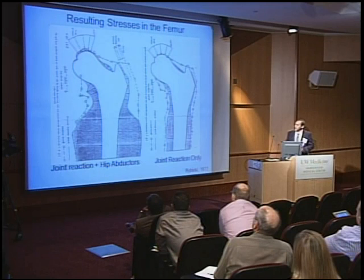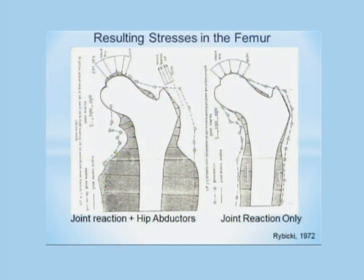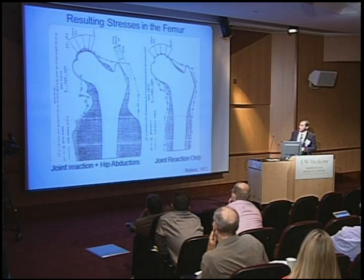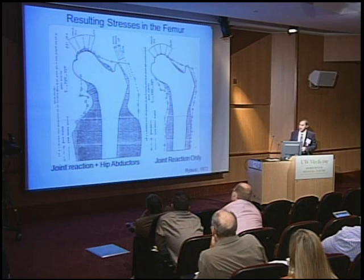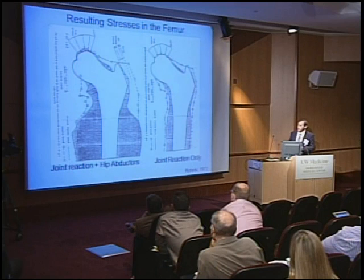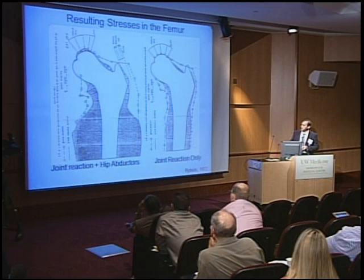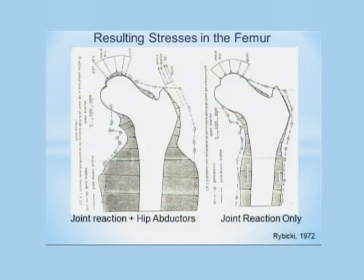This is a fairly complicated diagram, but it has some simple messages. Basically, this is a stress analysis done on the femur in two cases: first without muscle forces, and the second with muscle forces. The gray area represents the stress at the surface of the bone tissue. The tensile stresses are on the lateral side, and compressive stress is on the medial side. There's a tremendous contribution of muscle forces to the overall force acting on the hip.